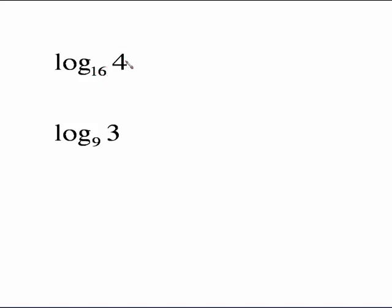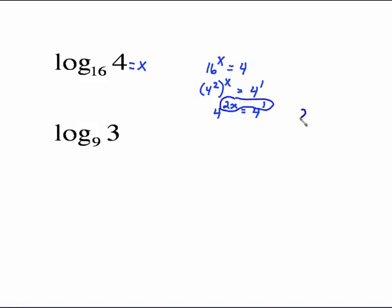Now there are two other categories that get more difficult. When the base is bigger than the argument, it's hard for some people. Set it up equals x, then exponentially: 16 to the x equals 4. To solve, write both with the same base. 16 is 4 squared, all raised to the x. Using exponent laws, that's 4 to the 2x equals 4 to the first. Equal bases mean equal exponents: 2x equals 1, so x equals 1 half. Log base 16 of 4 equals 1 half.